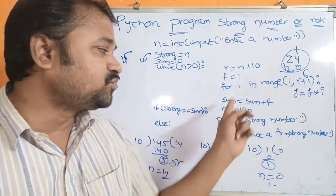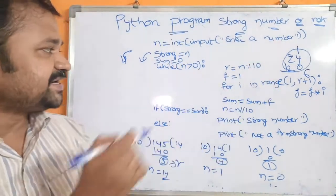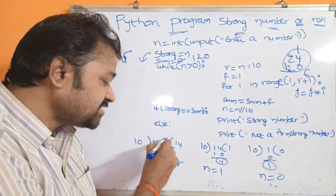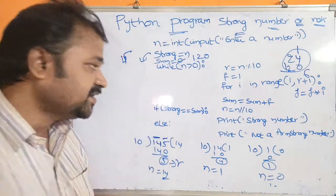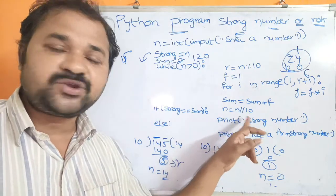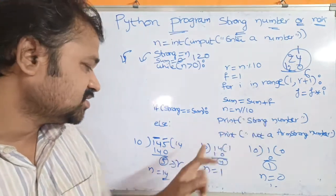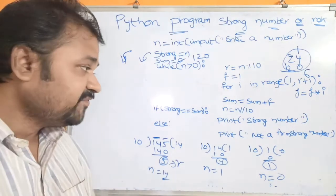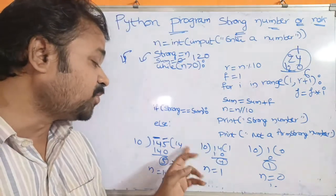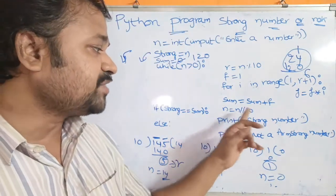Now we add f to sum: sum = sum + f. The initial sum is 0, and f is 120, so sum becomes 120. We have processed the digit 5. Next we perform floor division: n = n // 10. Using two slash symbols gives us the integer part, so 145 // 10 = 14. If we used regular division we would get 14.5, but we need only the integer part, which is 14. So n becomes 14.